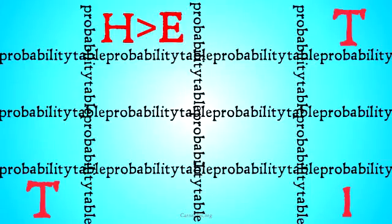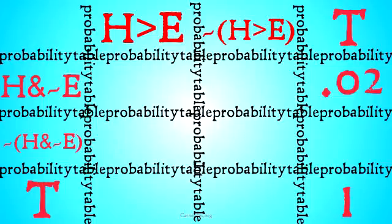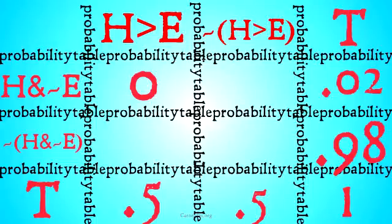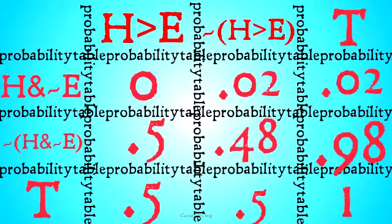Looking at our new table, we have for our evidence H-implies-E and it's-not-the-case-that-H-implies-E, crossed with H-and-not-E and it's-not-the-case-that-H-and-not-E. We have a 0.02 degree of belief in H-and-not-E, giving us 0.98 for not-(H-and-not-E). We have 0.5 and 0.5 for H-implies-E and its negation. Because of the definition of implication, we must assign zero to H-implies-E-and-H-and-not-E all being the case. This allows us to fill in the rest of our probabilities. It should be clear that if we conclude H implies E, that will confirm not-(H-and-not-E) and disconfirm H-and-not-E, reducing our degree of belief in H-and-not-E to zero.